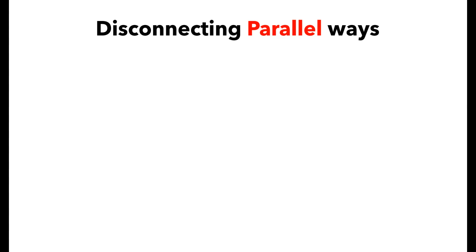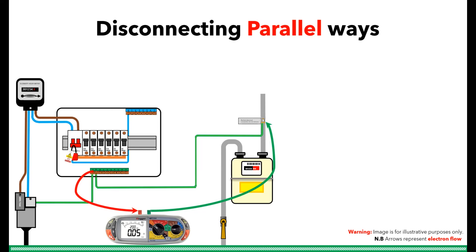We often hear the term parallel ways, but what does that actually mean? This diagram represents what would happen if you were testing a main bonding conductor between the main earth terminal, or MET, and the gas pipe if there was nothing else connected. The electrons would flow out of the negative terminal of the MFT along the test lead through the main bonding conductor and into the MET before traveling back into the positive terminal of the batteries within the MFT and completing the circuit.